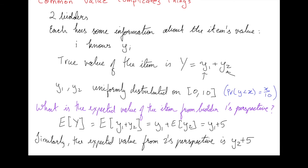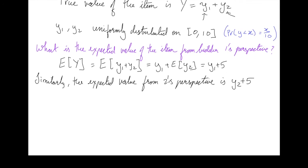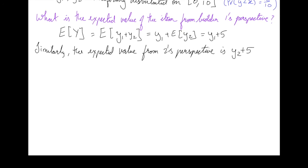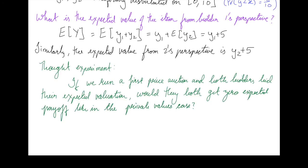So let's do a little thought experiment here, and suppose that the bidders both bid their valuation, and we'll run a first price auction. Remember that if you bid your valuation in a private value first price auction, your payoff is 0. Would that be true here? Should we expect that if each bidder, bidder I, bids YI plus 5, would we expect that they would both get payoffs of 0, or at least an expected payoff of 0? Let's see.